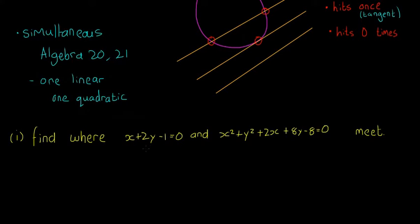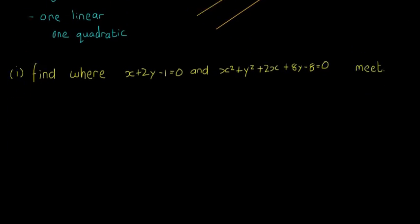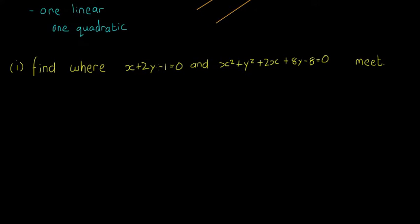The question asks us to find where the line x + 2y − 1 = 0 and the circle x² + y² + 2x + 8y − 8 = 0 meet. We need to find where the circle and line intersect. There's no need to draw a sketch since we don't yet know if it hits twice, once, or zero times.